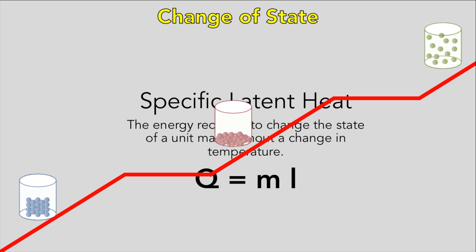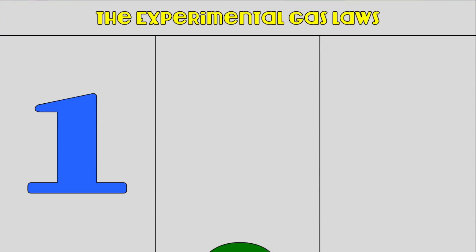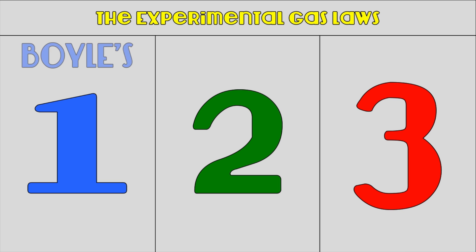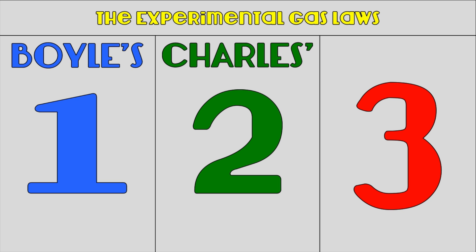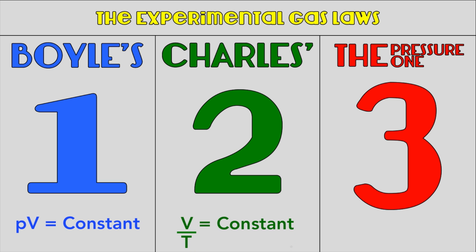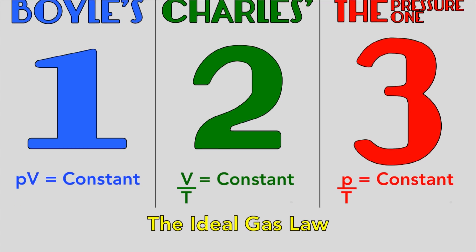The experimental gas laws now. There are three experimental gas laws: Boyle's, Charles', and the pressure one. Boyle's law states that for a fixed mass of gas at constant temperature, PV equals a constant, where P is the gas pressure and V is the gas volume. Charles' law states that at a constant pressure, V over T equals a constant, where V is the gas volume and T is the temperature in Kelvin. And finally, the pressure law, which states that P over T equals a constant, where P is the pressure and T is the temperature, again, in Kelvin. All in Kelvins here.